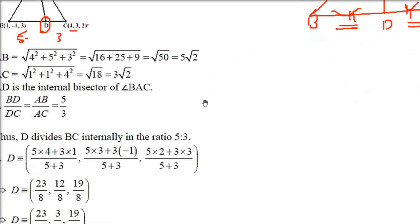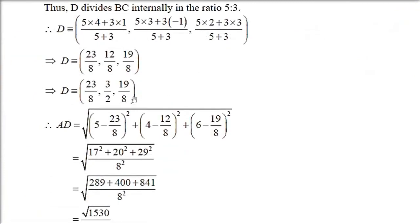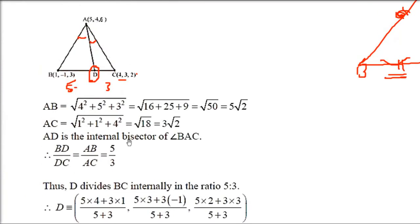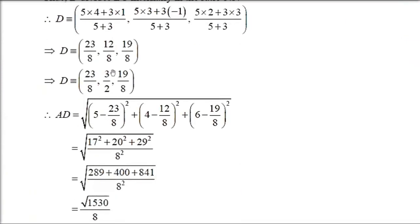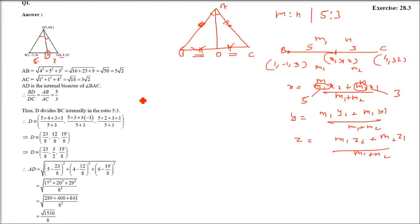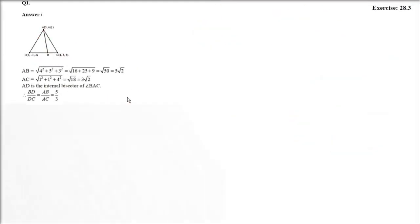When the D point is known, A is also known. The coordinates of A and D are known, so you can find out the distance AD by the distance formula. A is 5, 4, 6 and these are the D point coordinates, so the distance will give 0 into 1, 5, 3, 0 by 8.